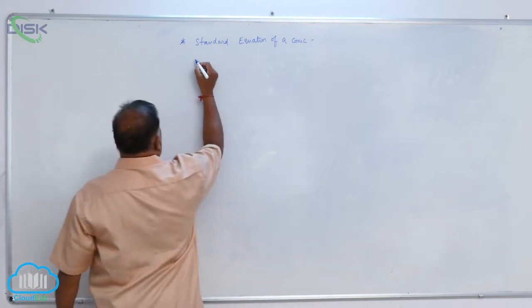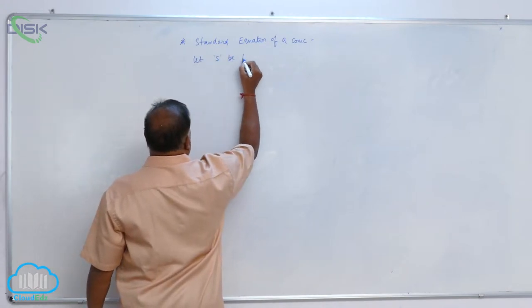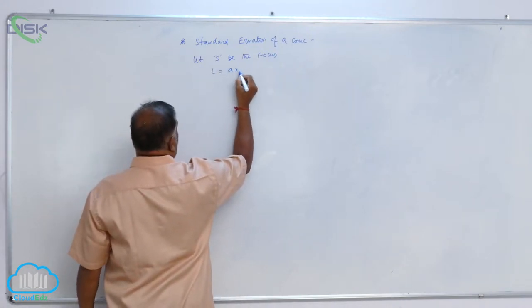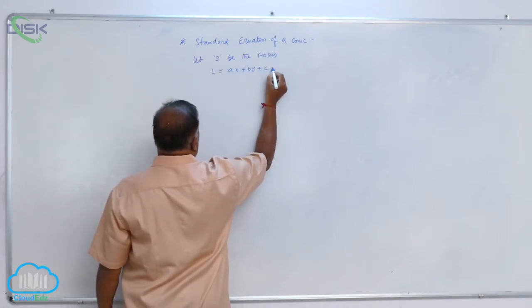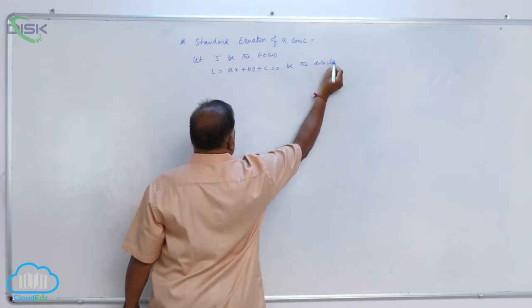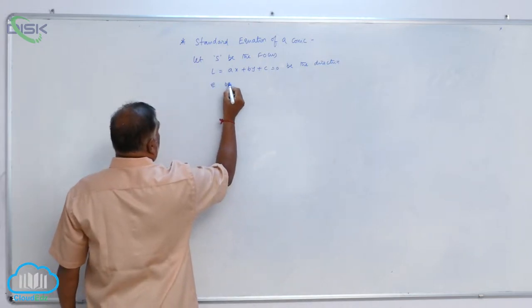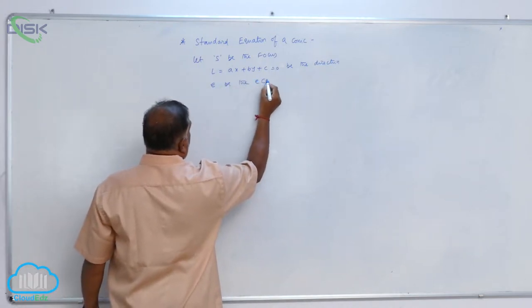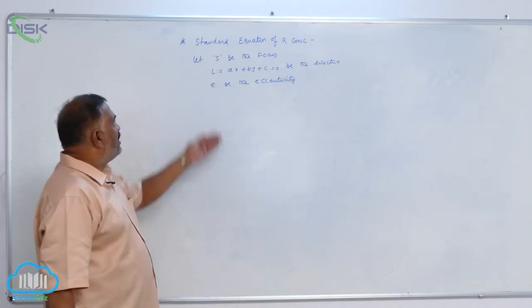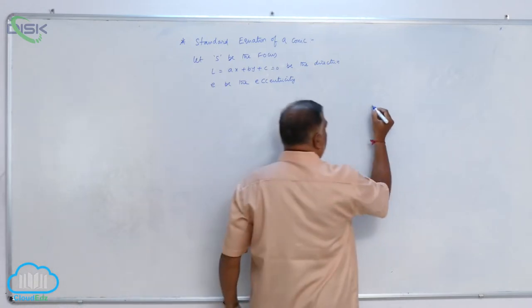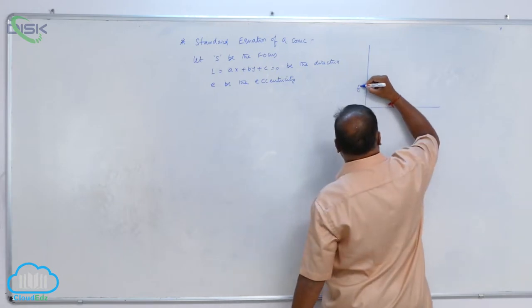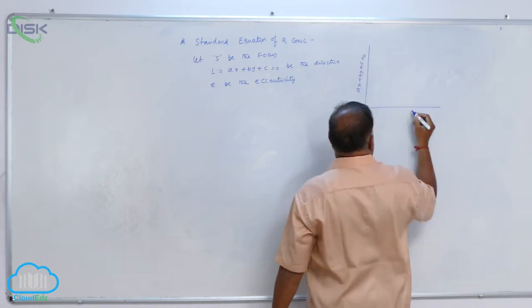So, let S be the focus, L equal to Ax plus By plus C equal to 0 be the directrix. Then comes E be the eccentricity. Now, you can take the figure also like this. This is going to be Ax plus By plus C equal to 0.